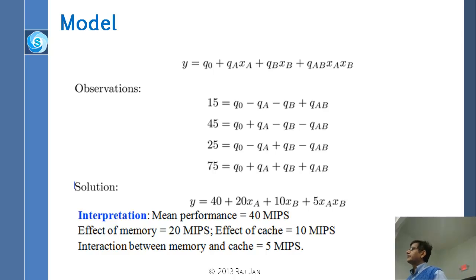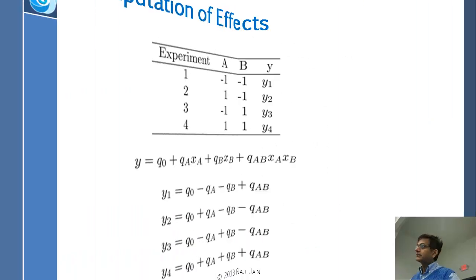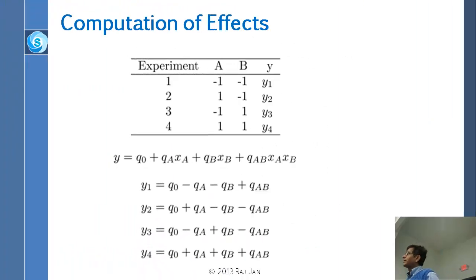How did I solve those equations? You can solve those equations by subtracting and adding, but there is a simpler method. It is a tabular method. You write down a table in which you write down A, B and you start with 0, 1, 1, 0, 1, 1, 1, 1, whatever we do in binary table, but instead of 0 just write a minus 1. So minus 1 minus 1, plus 1 minus 1, minus 1, 1 and 1, 1.